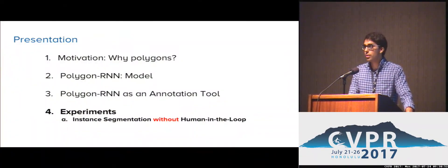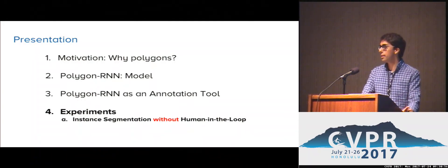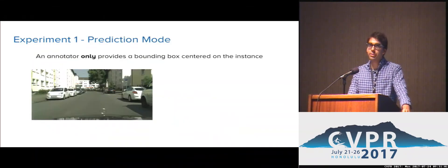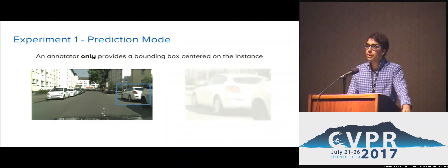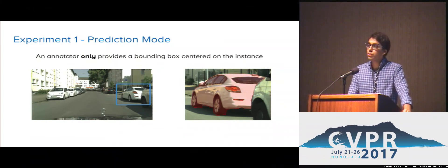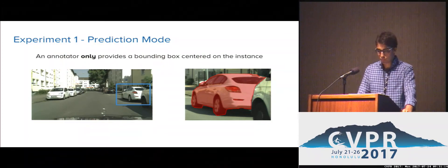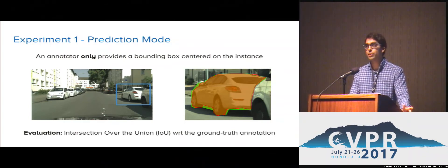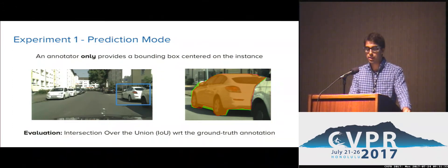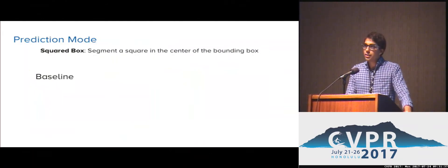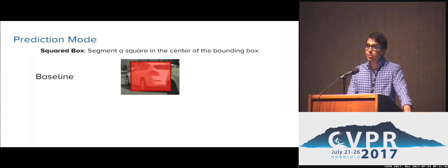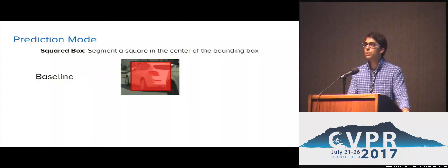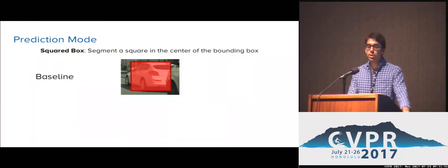Now I'm going to talk about the experiments we conducted. First, I'm going to talk about segmenting instances without using any kind of user interaction. We assume we are given bounding boxes for some instances, and for each of them we want to generate the segmentation without any user interaction. We want these segmentations to be as close as possible to the ground truth annotations. To compare the performance of different models, we compute the intersection over union of our predictions with the ground truth annotations across the eight instance categories in the Cityscape's dataset. We consider a square box centered on the instance crop as the segmentation baseline — square box is one of the simplest forms of polygons, containing only four vertices. This sets a lower bound, and we want Polygon RNN to generate finer outlines using more complex polygons.